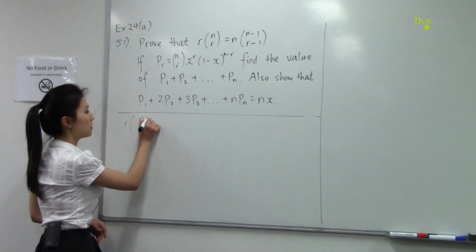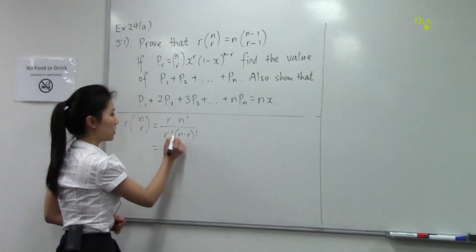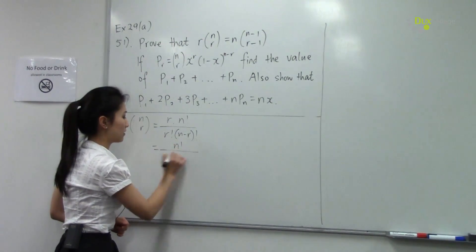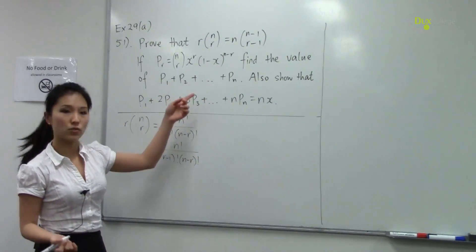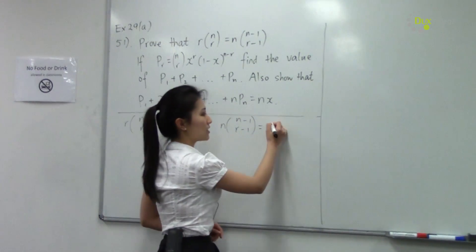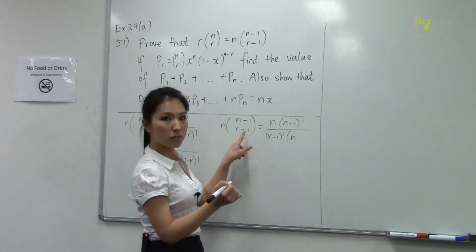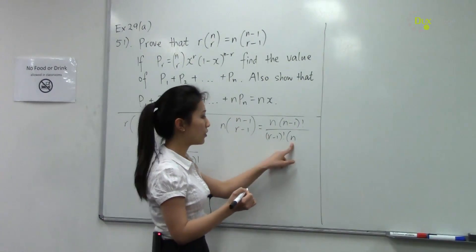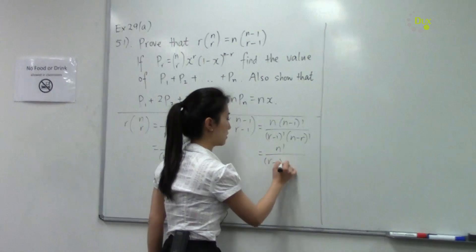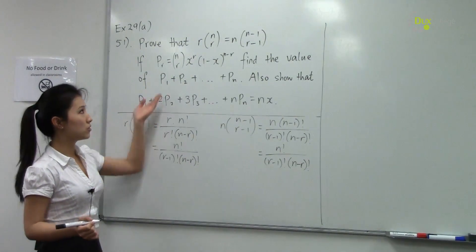To prove the identity, on the left-hand side we have r times C(n,r). Expanding gives r times n! / (r! · (n-r)!), where r and r! cancel, leaving n! / ((r-1)! · (n-r)!). On the right-hand side, n·C(n-1, r-1) expands to n times (n-1)! / ((r-1)! · (n-r)!). Since n·(n-1)! equals n!, the left-hand side equals the right-hand side, so the identity is proved.